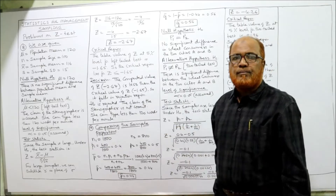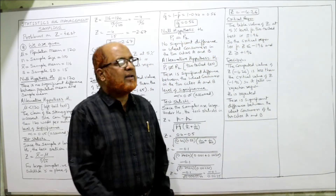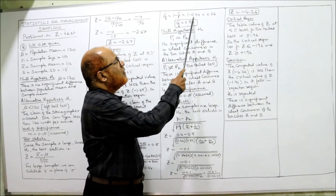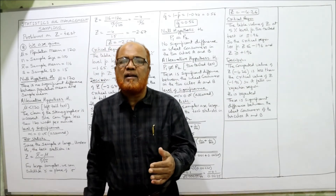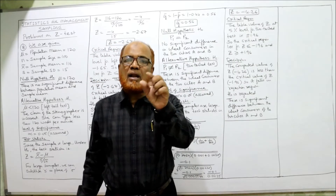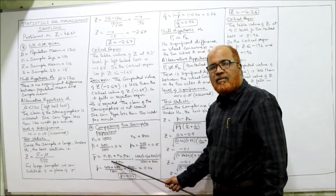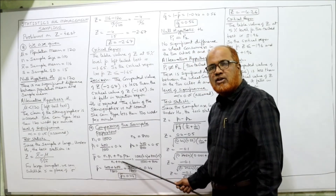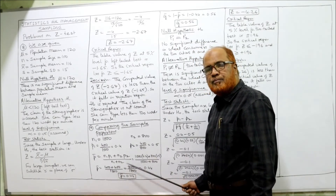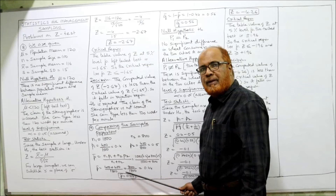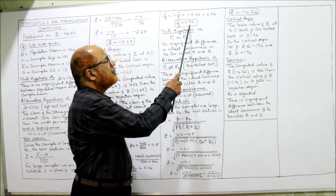Q-bar is 1 minus P-bar, so 1 minus 0.44 is 0.56. We have now calculated P-bar and Q-bar. Remember the formula: N1*P1 plus N2*P2 divided by N1 plus N2 gives P-bar, and 1 minus P-bar gives Q-bar.